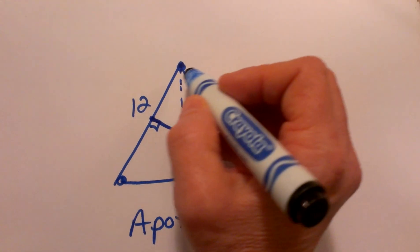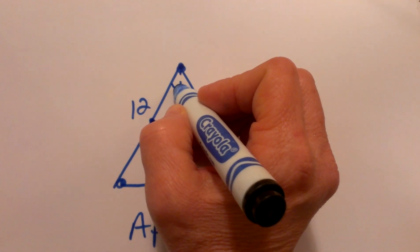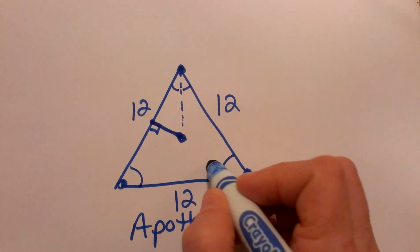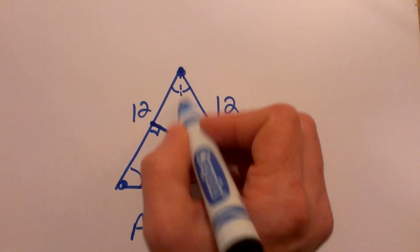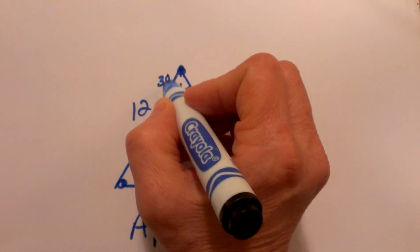When I do that, I have created a triangle that is very helpful. Remember that these angles at all three corners are 60 degrees. So when I draw in this radius, I cut this angle in half, so I have a 30 degree angle up here.